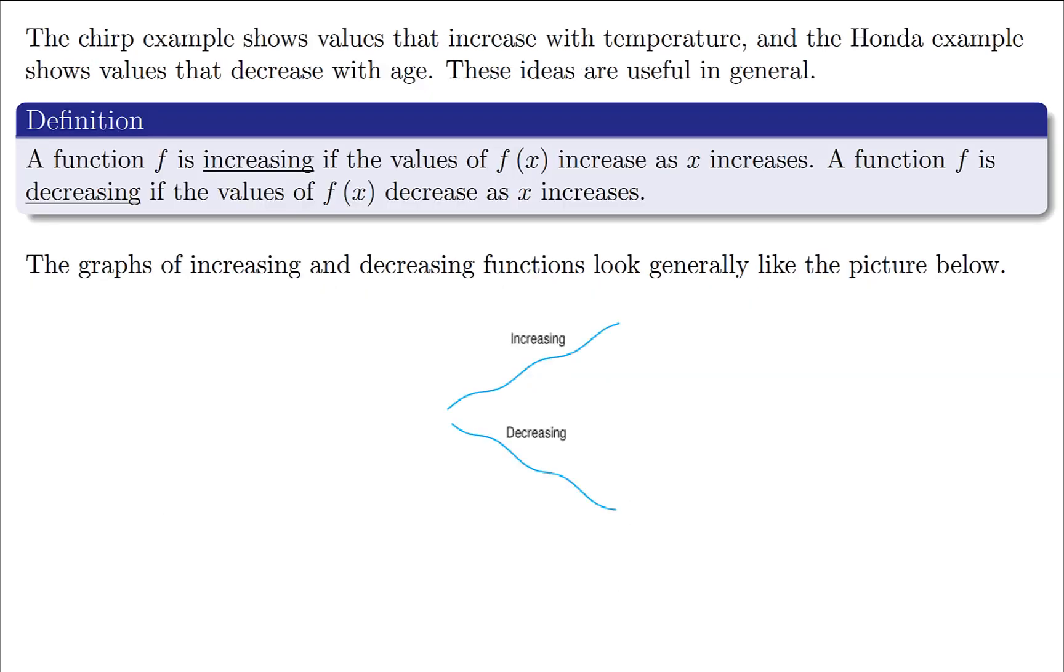For this last slide, let's analyze a couple of the examples that we had. For the chirp example, the values for the chirps per minute increased as the temperature increased. But for that Honda example, we saw that the car's value decreased as the age increased. This is the idea of an increasing and decreasing function.